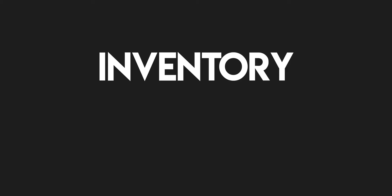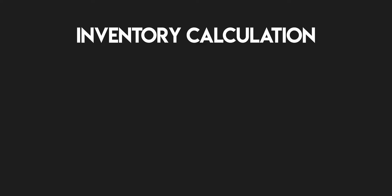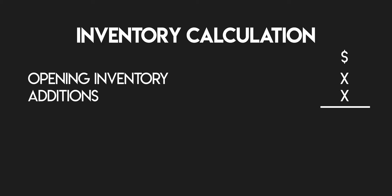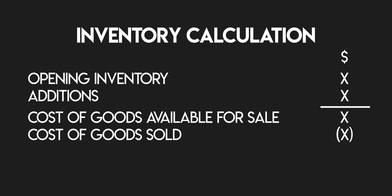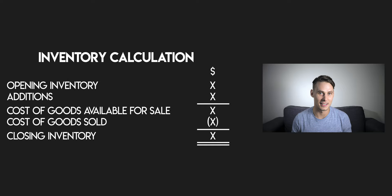When do we need inventory cost flow assumptions? Let's think back to our inventory calculation from the previous video. Opening inventory plus additions gives us cost of goods available for sale, and when we subtract our cost of goods sold from this, we get our closing inventory. Now, here's the thing — up until now, we've assumed one constant cost price across all of your inventory.